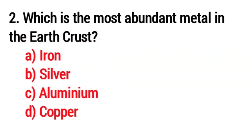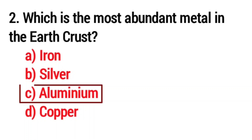Q2. Which is the most abundant metal in the earth's crust? A. Aluminium.